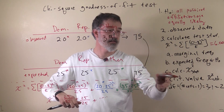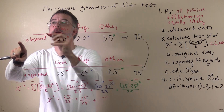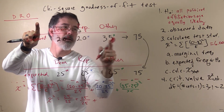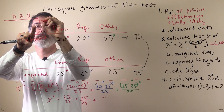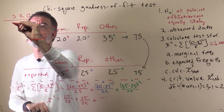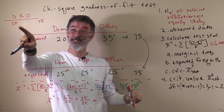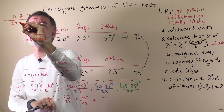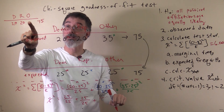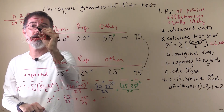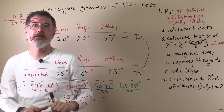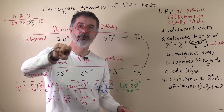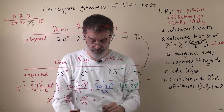The more intuitive way to think about this: if we have Democrats, Republicans, and other, and we know the marginal total is 75 — if we put 20 in for Democrats, we cannot tell what Republican or other is, they are still free to vary. But if we put 20 in for Republican, then other is no longer free to vary; it has to be 35. So there were 2 numbers that were free to vary, giving us 2 degrees of freedom.